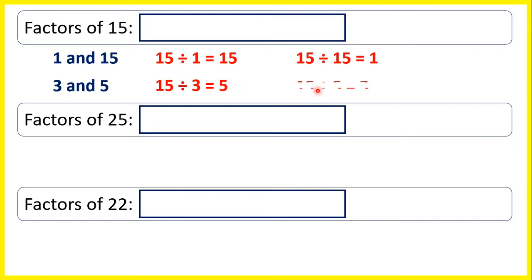Or because 15 divided by 3 is 5, so no remainder, and 15 divided by 5 is 3, no remainder. So the factors of 15 are 1, 3, 5 and 15.